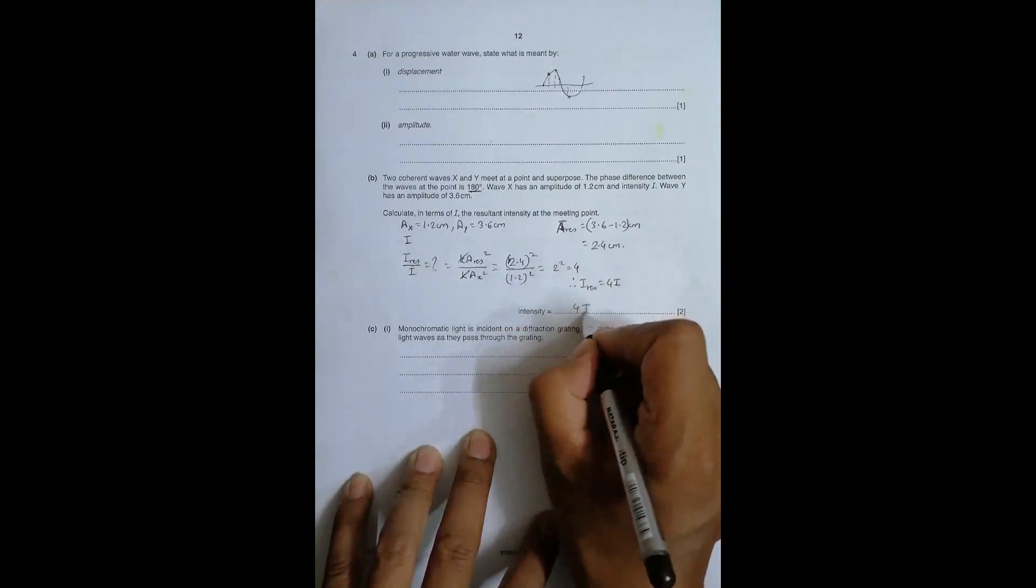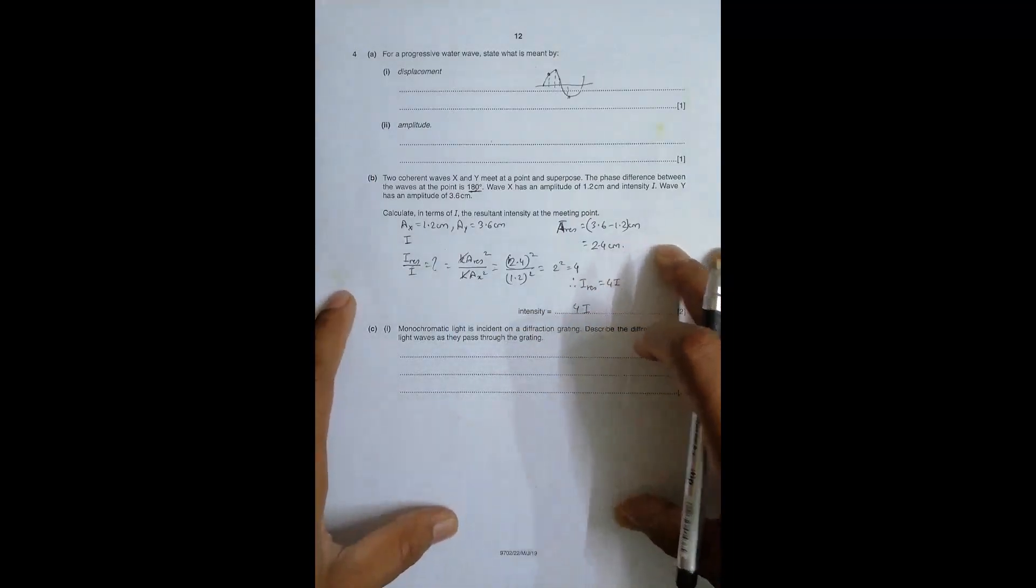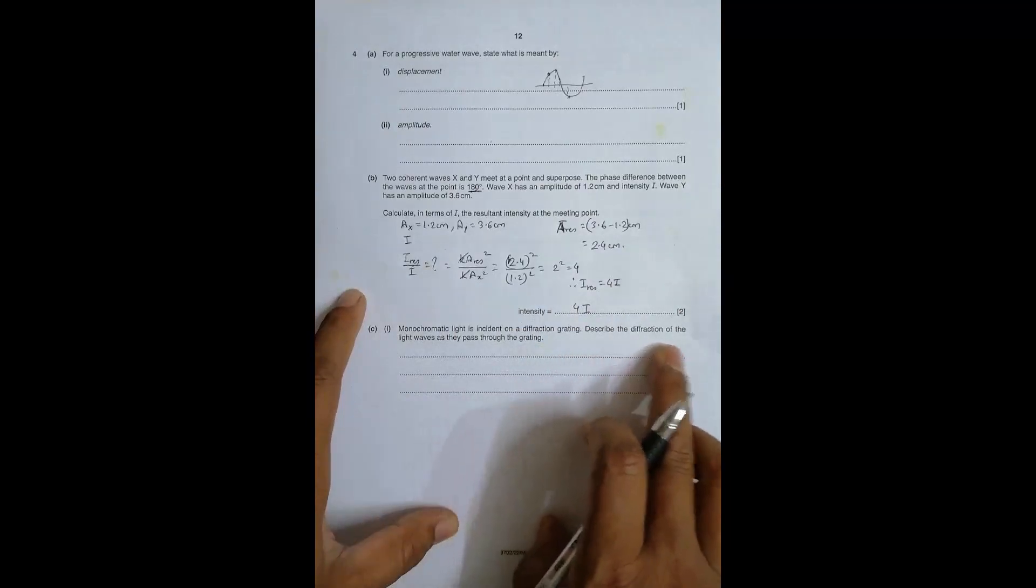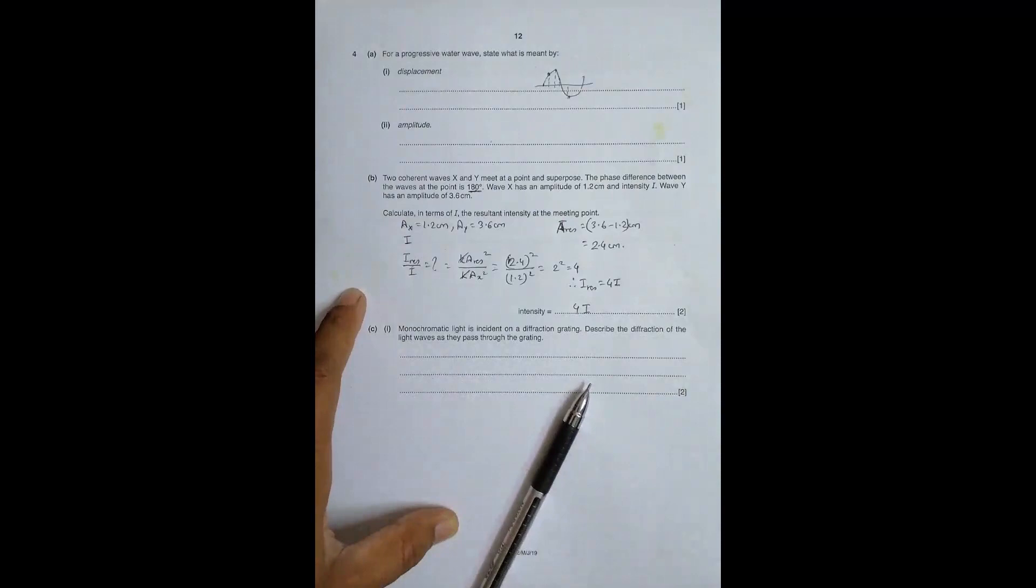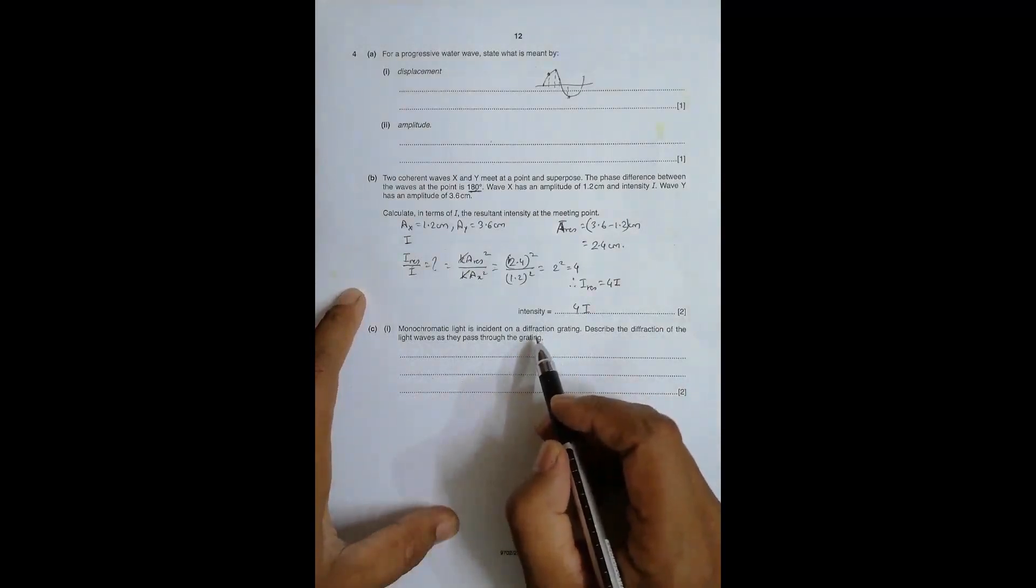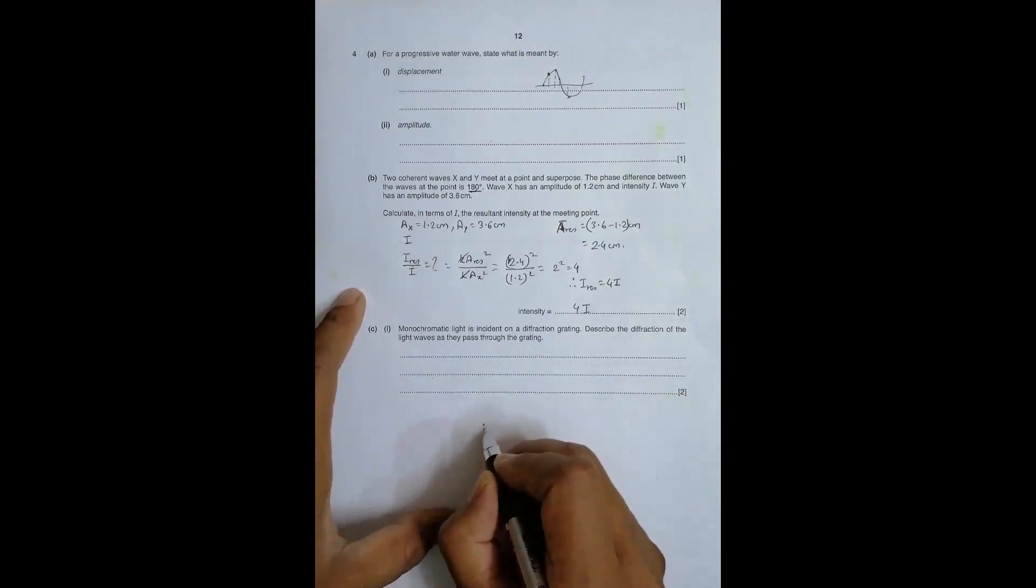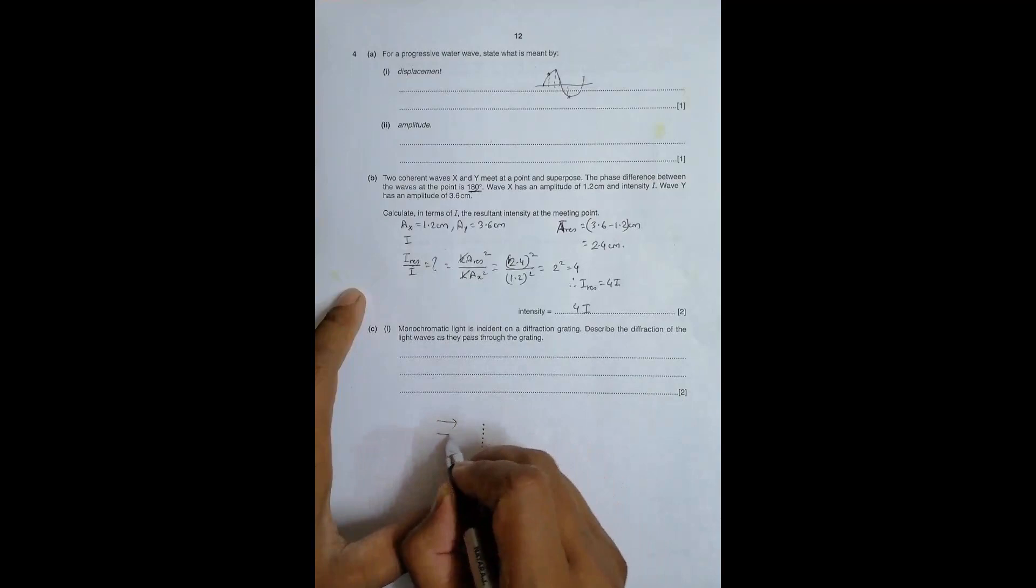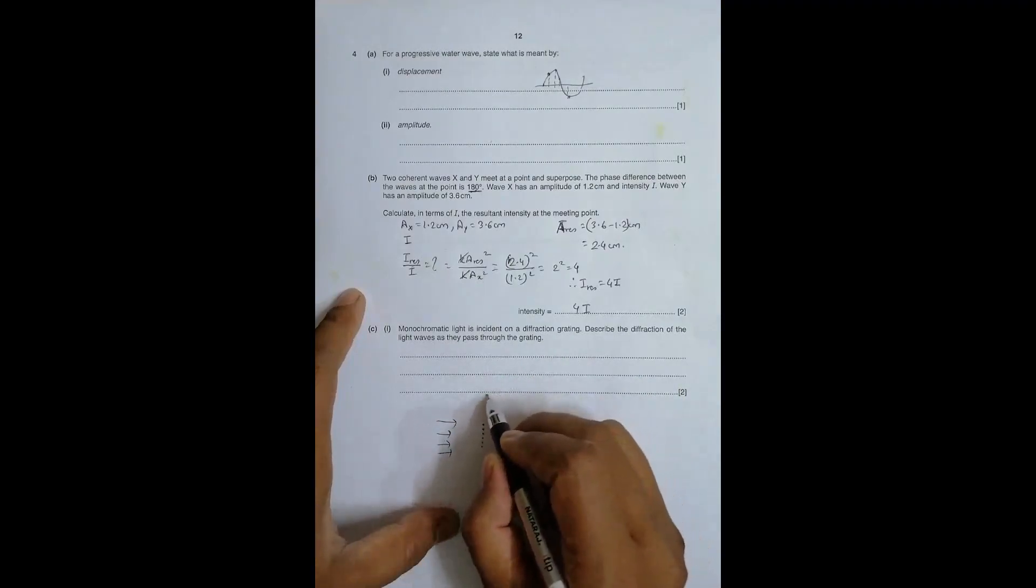Number C1: Monochromatic light is incident on a diffraction grating. Describe the diffraction of the light waves as they pass through the grating. So they pass through the numerous slits, uncountable number of slits of the grating, and then what happens is they spread. So if we have the slits like this, we pass light through and they spread throughout this region.